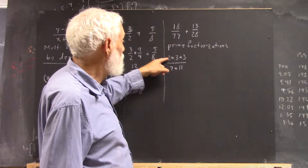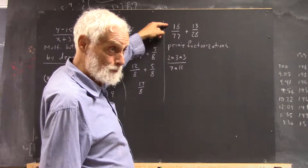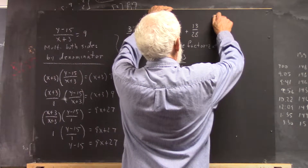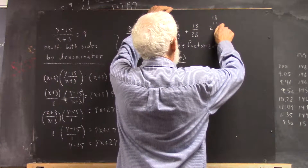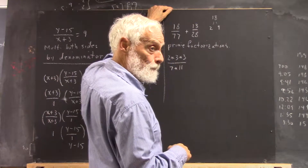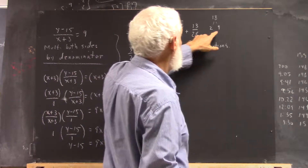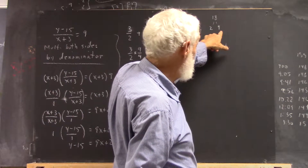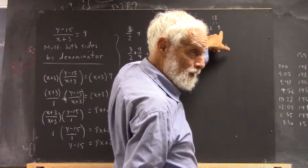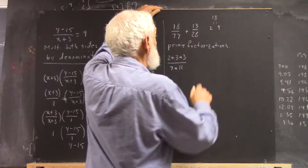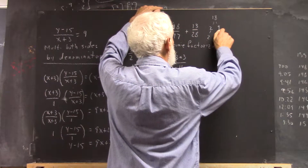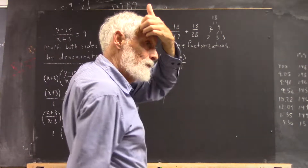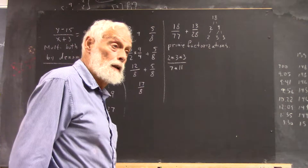So to get the prime factorization of eighteen, we divide it by two. We can kind of write that out here. Eighteen breaks down to two times nine, right? Now two is prime, but nine isn't, because nine is not divisible by two. If it was, we would divide it by two, but we divide it by three. So our two is here, and our nine breaks into three times three. So we can write our numerator as two times three times three.